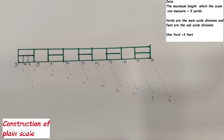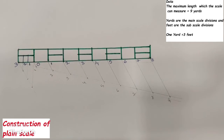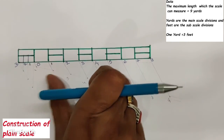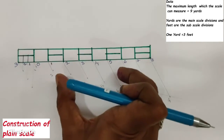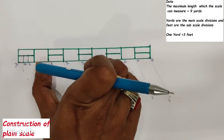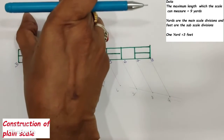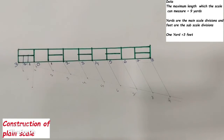Even though the problem didn't mention showing the measurement on the scale, it is better to show it. For example, we say 5 yards and 2 feet — that is, 5 yards from the main scale and 2 feet from the subscale.